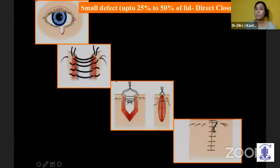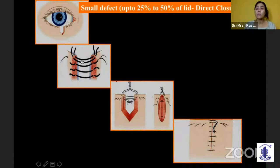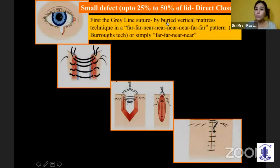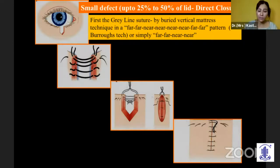For full thickness repair, the horizontal width algorithm is most commonly followed, but we also need to consider the vertical algorithm. If the defect is up to 50%, we usually go for direct lid closure. One of the easiest techniques is Burrows' technique — a far-far-near-near suture, which involves a very long incision.